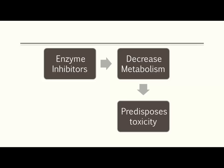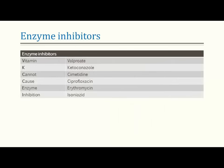Enzyme inhibitors decrease the number of metabolizing enzymes. This decreases drug metabolism, increases active drug concentration in the body, and can cause the drug to exceed the maximum therapeutic concentration — leading to toxicity. Enzyme inhibitors can be remembered as 'Vitamin K cannot cause enzyme inhibition': V = Verapamil, K = Ketoconazole, C = Cimetidine, C = Ciprofloxacin, E = Erythromycin, I = Isoniazid.